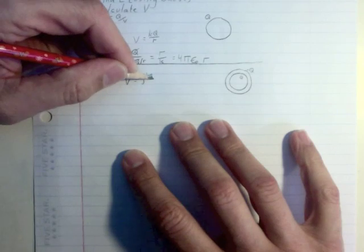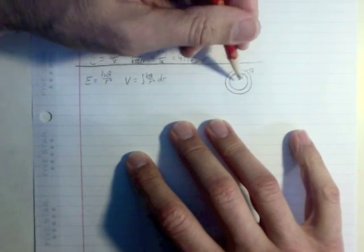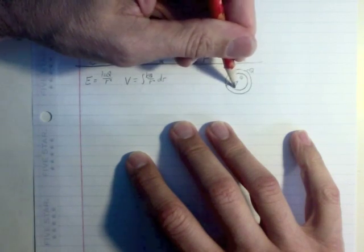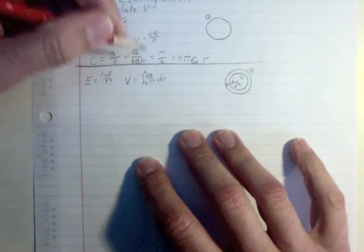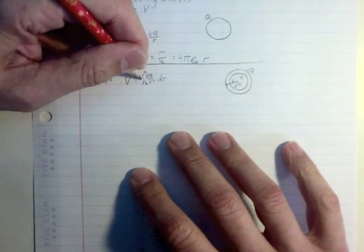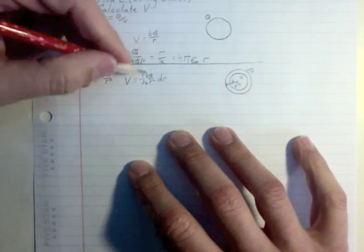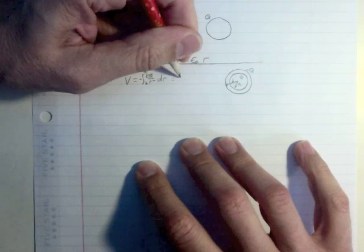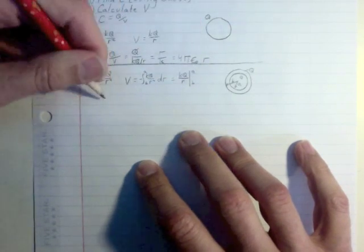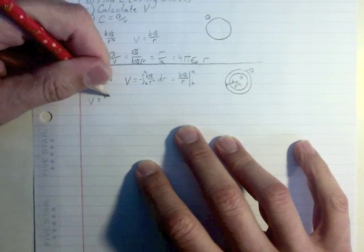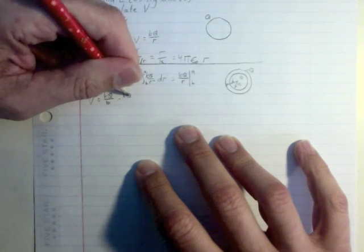Integral of KQ over R squared dr and I'm going to go from what's called the outside one B and the inside one A. So I'm going to go from B to A, from the negative to the positive. From B to A. And this is negative. I really don't so much care about that because I just want the magnitude anyhow. But this ends up being KQ over R negative. So that cancels the negative out in front. From B to A. Voltage equals KQ over B minus KQ over A.